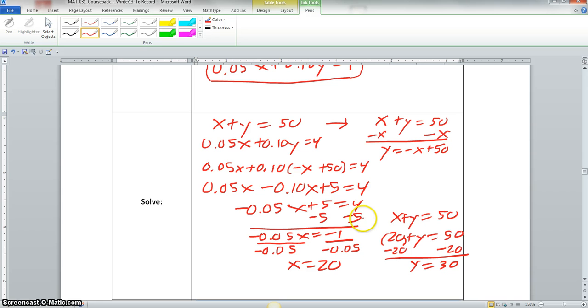So I would subtract 5 on both sides. And I would have negative 0.05x equals negative 1. Now I divide each side by negative 0.05. And that would leave me x equals 20.